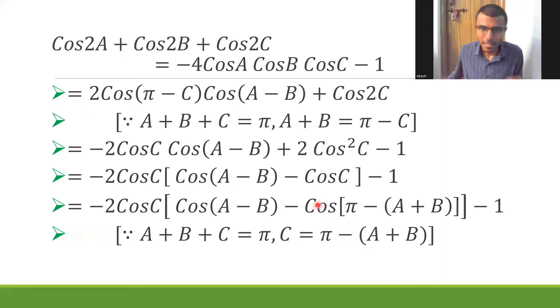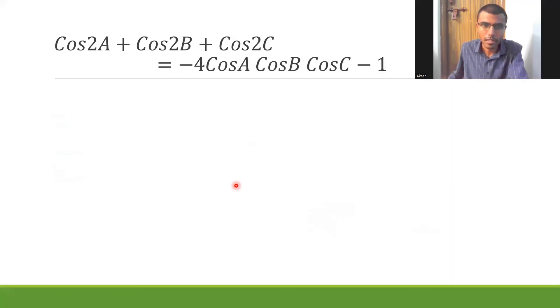Now, what is cos(π - θ)? It is -cosθ. So basically, -cos[π - (A+B)] would be nothing but +cos(A+B) because cos(π - θ) is -cosθ. So this would be nothing but -(-cos(A+B)). So minus into minus will be plus. So that's why this should be cos(A-B) + cos(A+B). So that's why we have -2cosC[cos(A-B) + cos(A+B)] - 1.